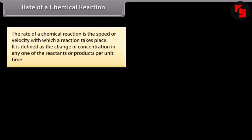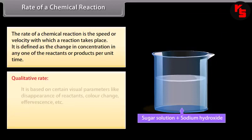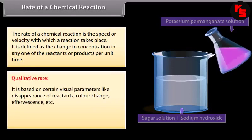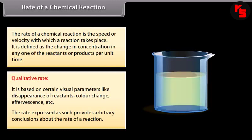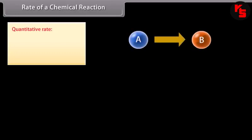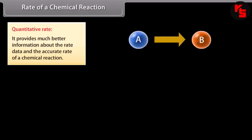The rate of a chemical reaction is the speed or velocity with which a reaction takes place. It is defined as the change in concentration in any one of the reactants or products per unit time. It can be expressed by two ways. Qualitative rate: it is based on certain visual parameters like disappearance of reactants, colour change, effervescence, etc. The rate expressed as such provides arbitrary conclusions about the rate of a reaction.